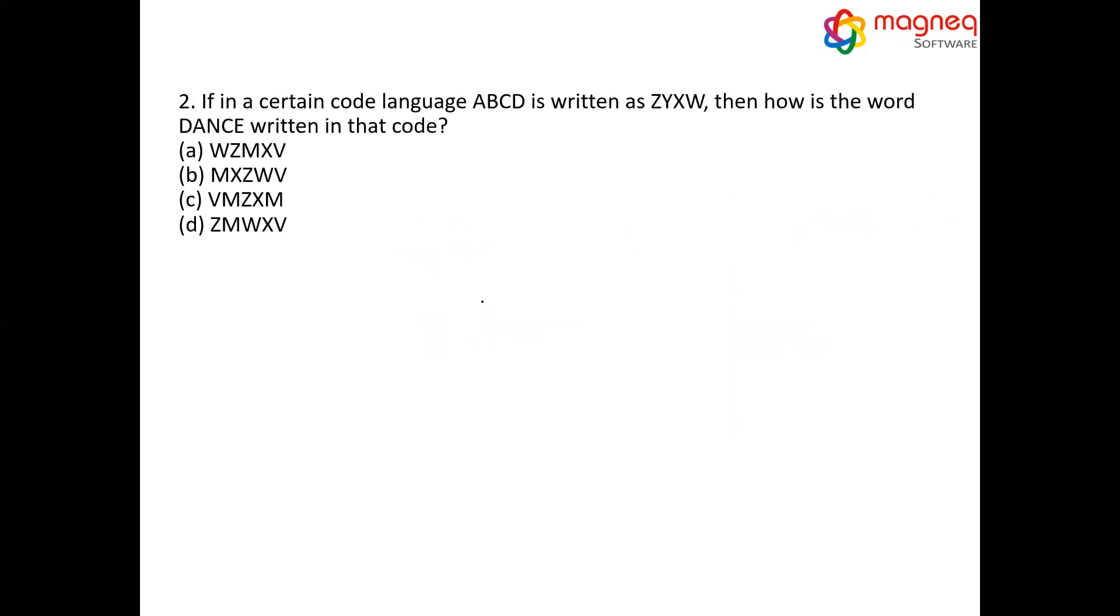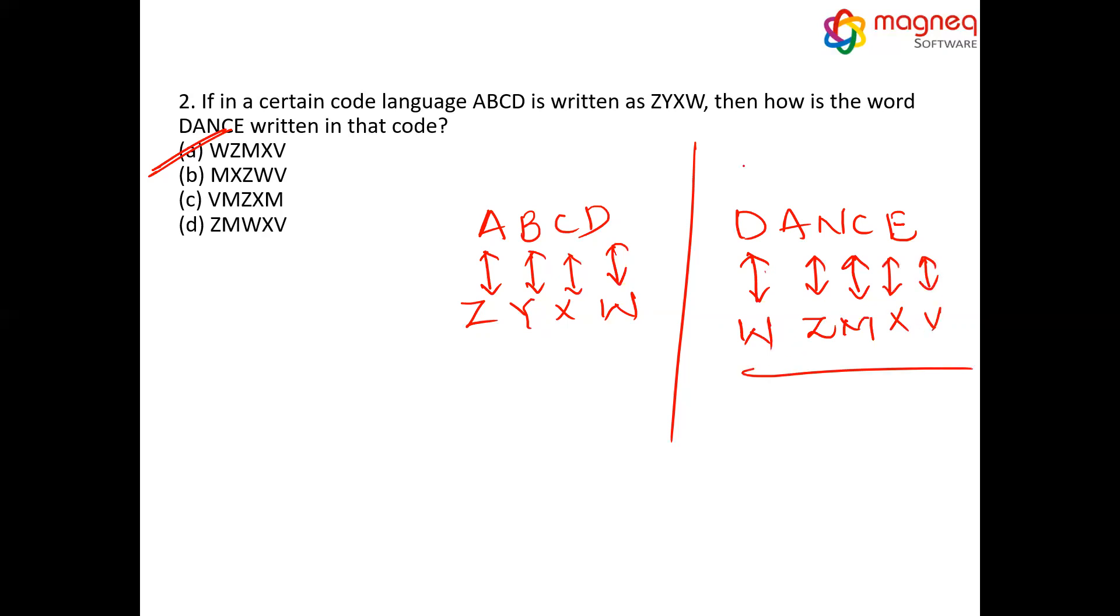Moving forward to next question. If in certain code, A, B, C, D is written as Z, Y, X, W. Now, what is a code for DANCE? If you clearly observe, A, B, C, D is coded as Z, Y, X, W. By using common sense, can I say these are the opposite pairs? A, Z, B, Y, C, X, D, W. Now, similarly, what about DANCE? D, W, A, Z, W and Z. Opposite of N is M. Opposite of C is X. Opposite of E is V. Answer is W, Z, M, X, V.